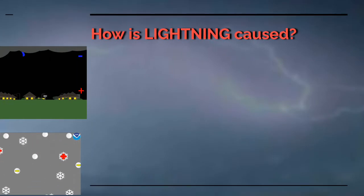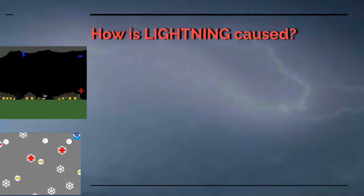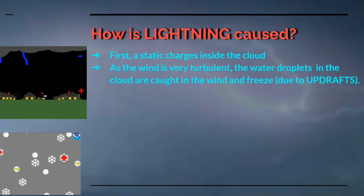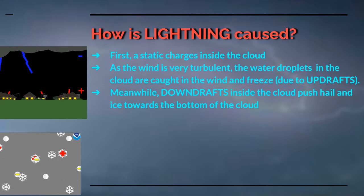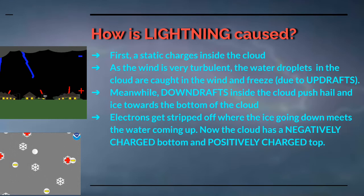How is lightning caused? This is the question we have all been asking. First, a static charge builds inside the cloud. As the wind is very turbulent inside the clouds, the water droplets in the cloud are caught in the wind and freeze due to the updrafts. Meanwhile, downdrafts inside the cloud push hail and ice towards the bottom of the cloud. Electrons get stripped off where the ice going down meets the water coming up. Now, the cloud has a negatively charged bottom and a positively charged top.